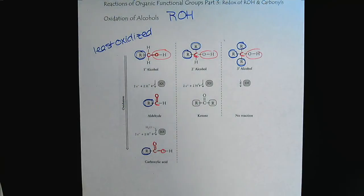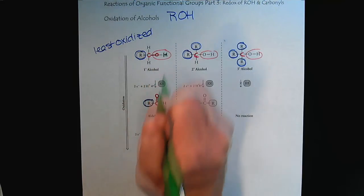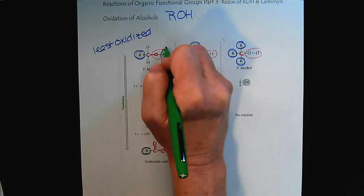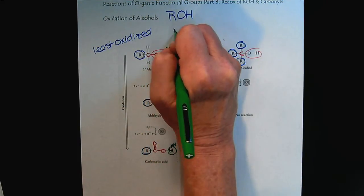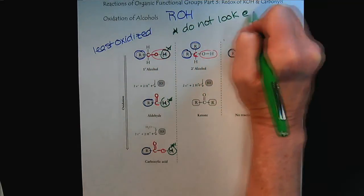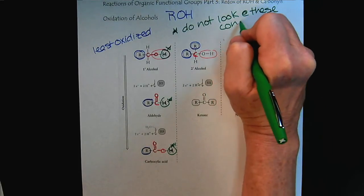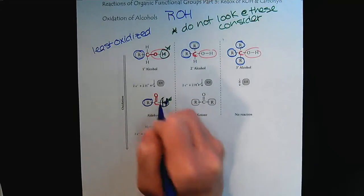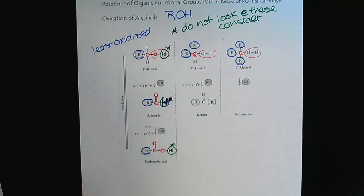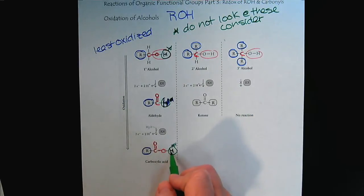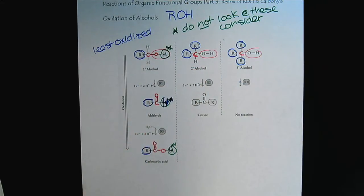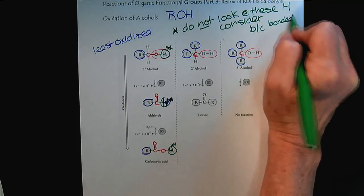I also want to point out about the hydrogens. These hydrogens, we do not consider. When we're talking about oxidation and reduction, we don't consider... this one we can consider because it's bonded to carbon. It's this one here and this one here. Why don't we consider those? Because those hydrogens are not bonded to carbon. We do not consider the alcohol hydrogen and the carboxylic hydrogen because they're bonded to oxygen.